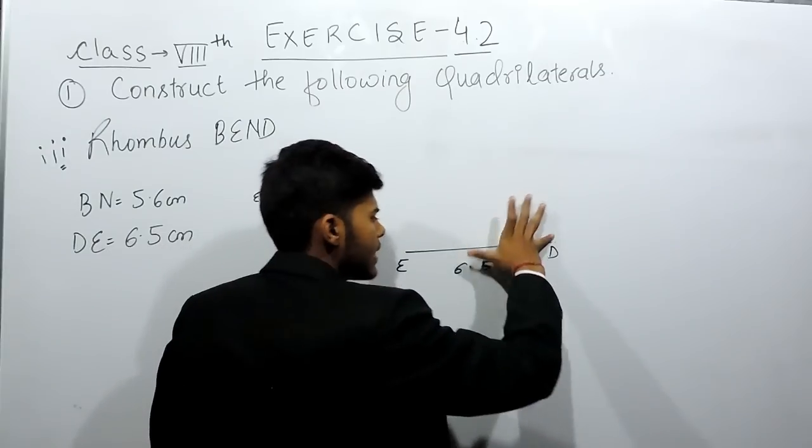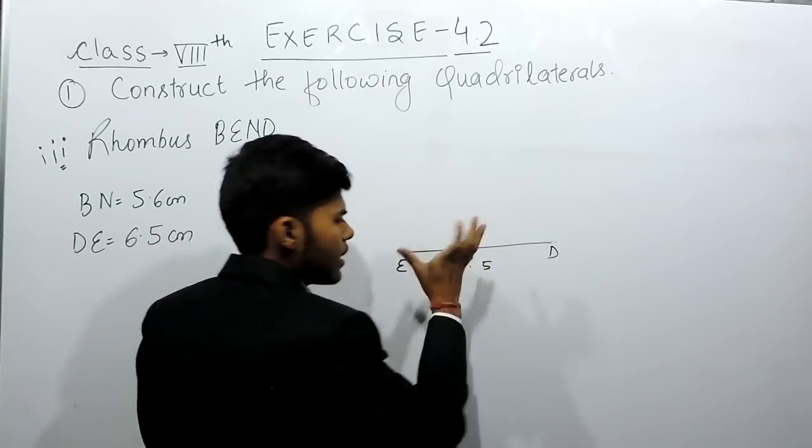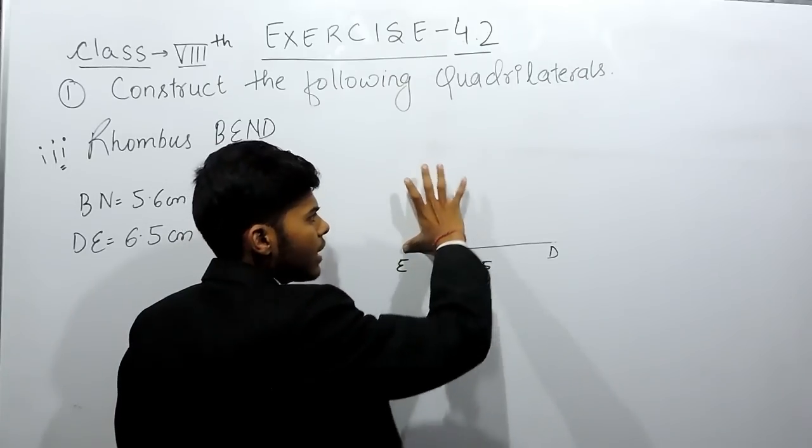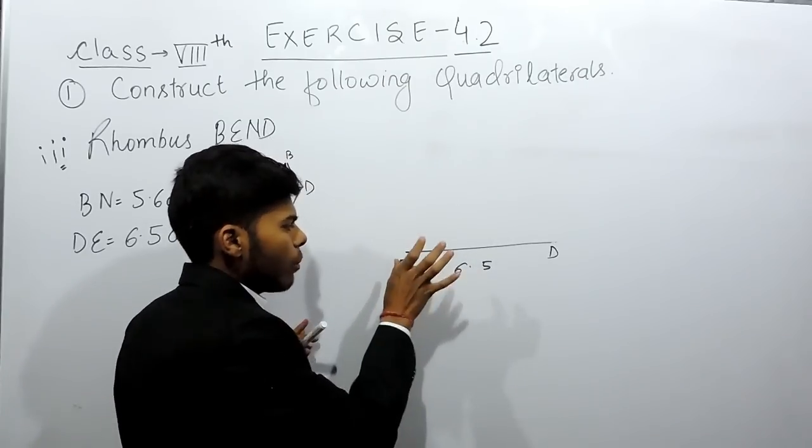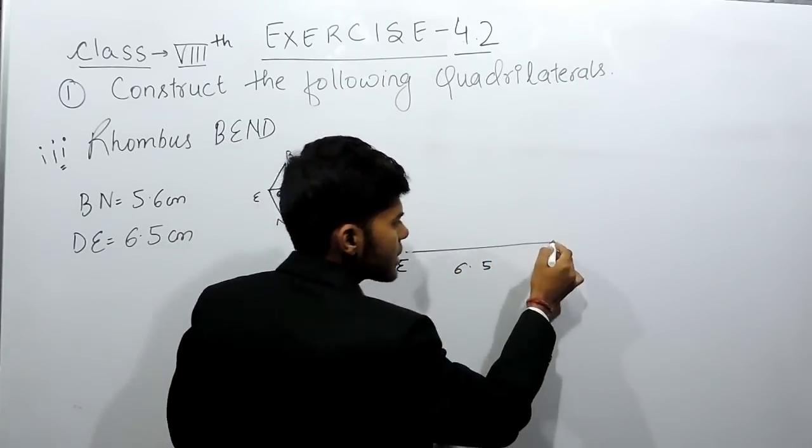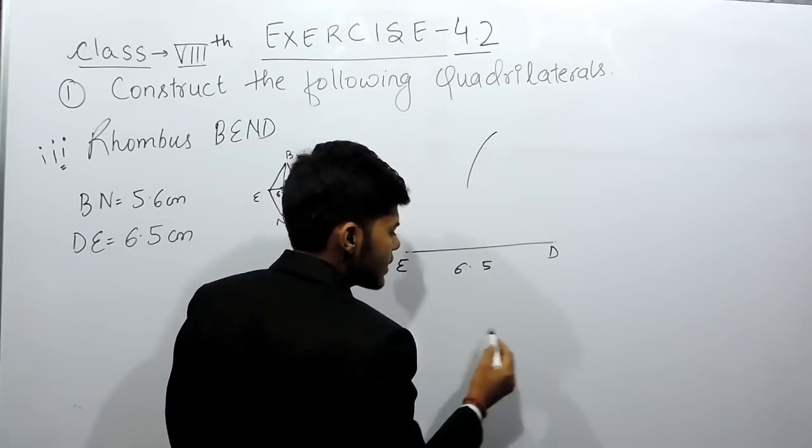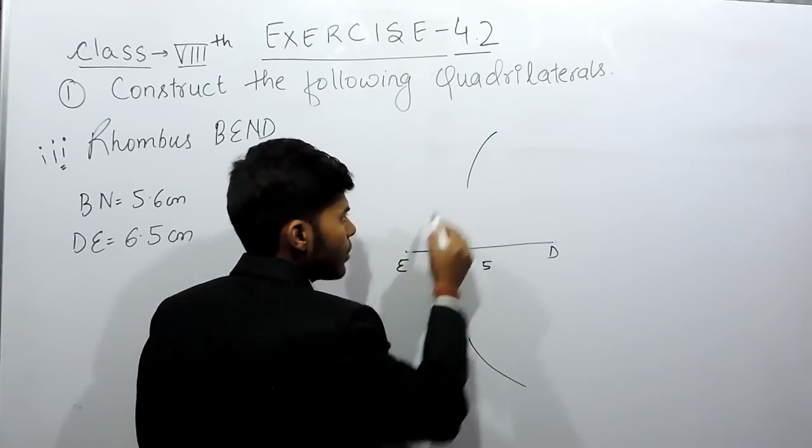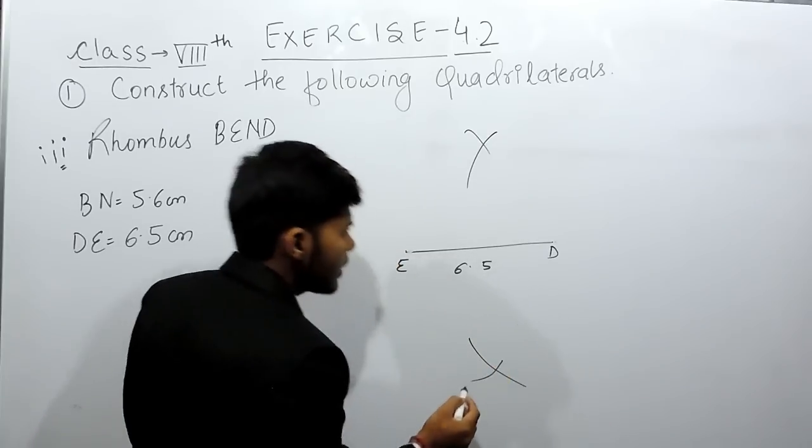Now, from this point D, mark an arc like this and like this. Keeping the compass of similar dimensions, from point E, mark it like this and like this. So it will be from D like this and like this, and from E like this and like this.